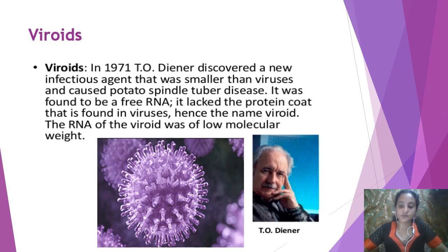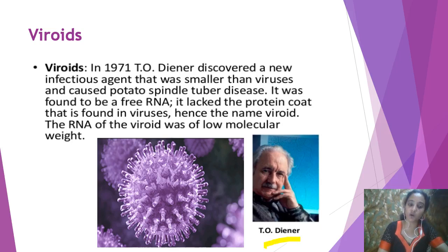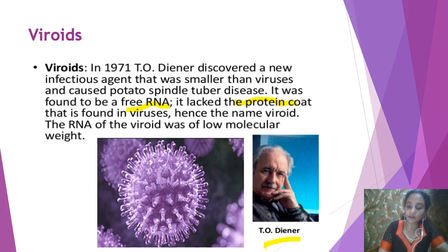The next part is about viroids. For your exam, there will likely be a question about the difference between viruses and viroids. Viroids might be smaller than a virus. This is T.O. Diener's picture — he is the one who discovered particles smaller than a virus, called viroids, in the spindle tuber disease of the potato. The difference is: viroids are found to be free RNA, and they don't have the protein coat, whereas viruses have the protein coat.